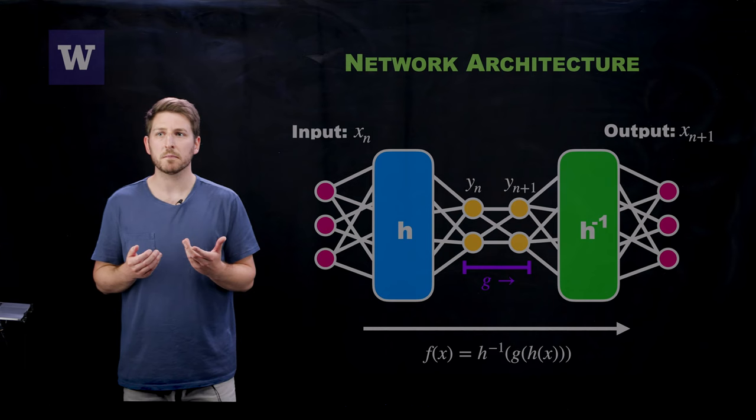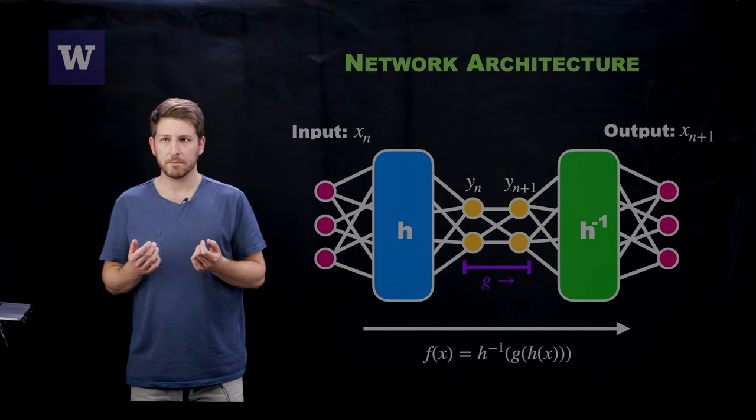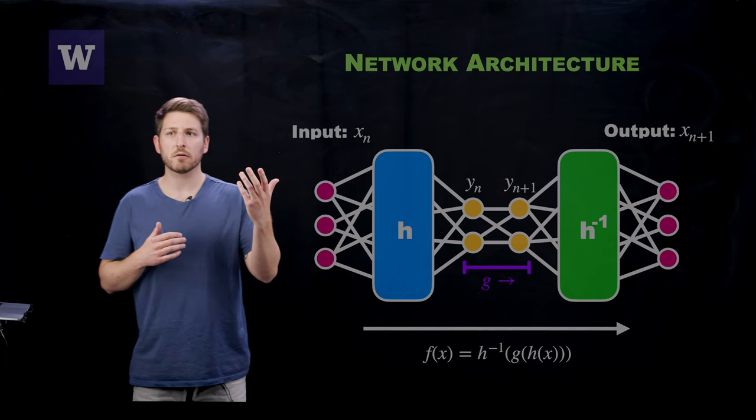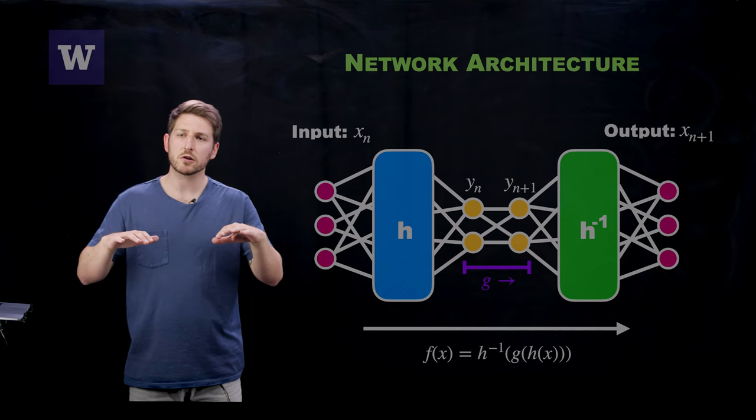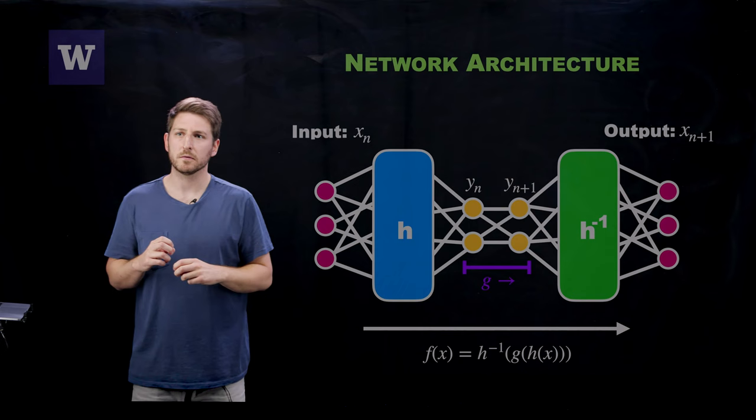Second of all, autoencoders are typically employed for dimensionality reduction. We can do the same thing here. You can imagine that you have a very high dimensional Poincaré section data, but it's really just describing something that is very, very low dimensional. Then what this can do is this can project you onto that low dimensional manifold and find the mapping that will iterate you along that manifold given by the latent space y.